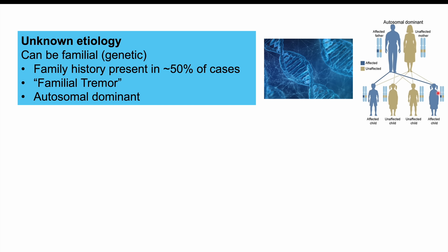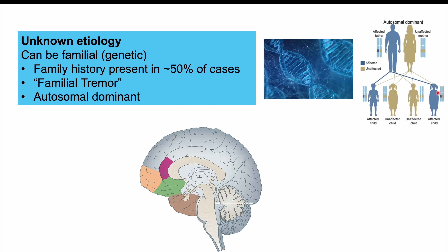The reason essential tremors occur is not entirely understood. It is likely that there is some issue in the brainstem, especially in the locus coeruleus. It has also been hypothesized that there is abnormal functioning of the central oscillator, located in the brainstem and involving the inferior olivary nucleus. There has also been some hypothesis regarding issues with cerebellar functioning or the connection between the brainstem and cerebellum.